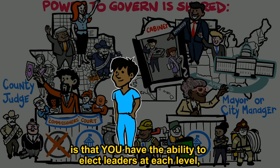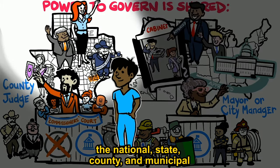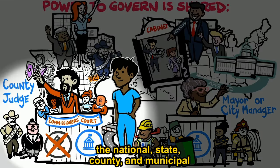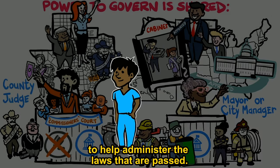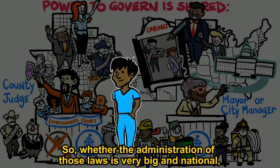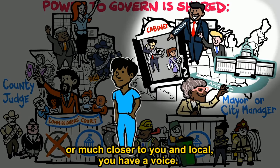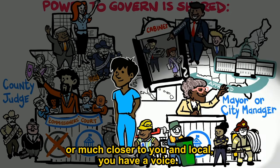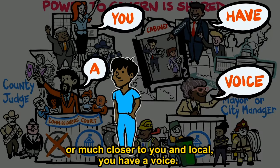One of the coolest parts about a federal system of government is that you have the ability to elect leaders at each level — the national, state, county, and municipal — to help administer the laws that are passed. So whether the administration of those laws is very big and national or much closer to you and local, you have a voice.